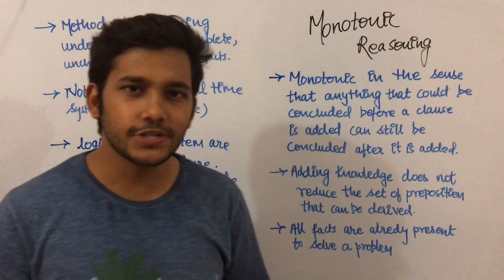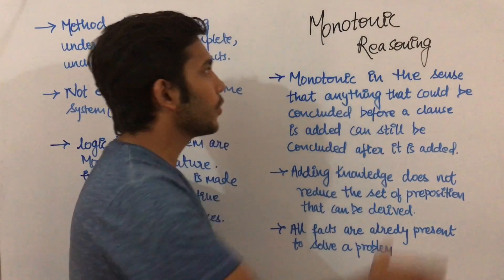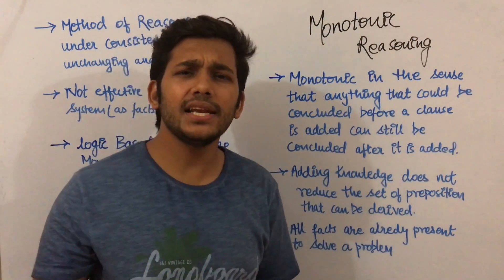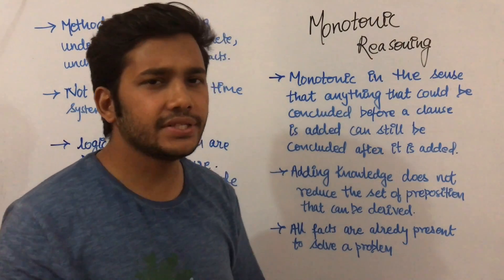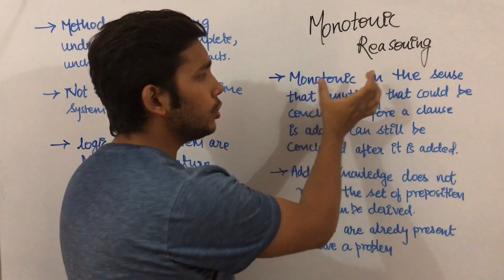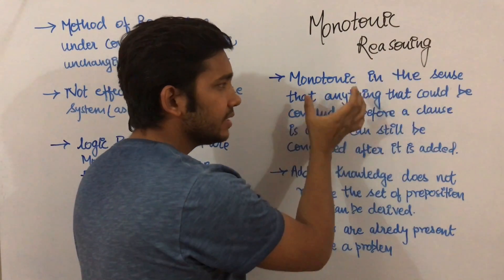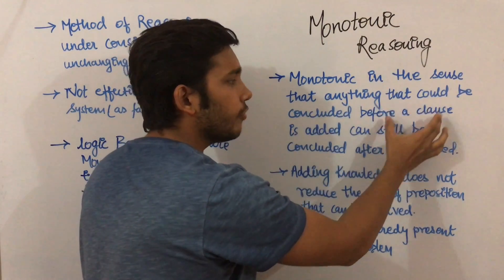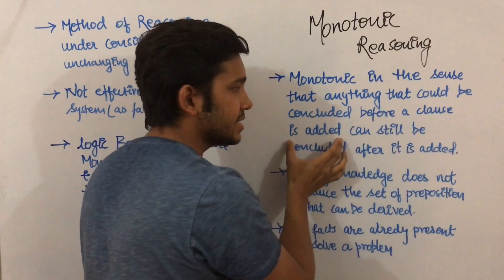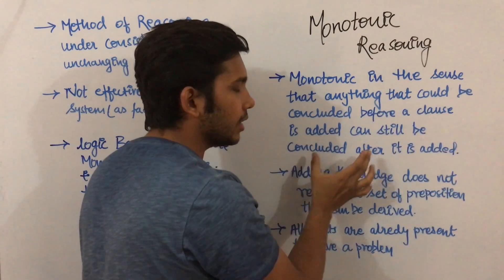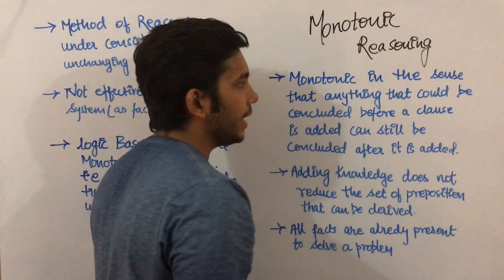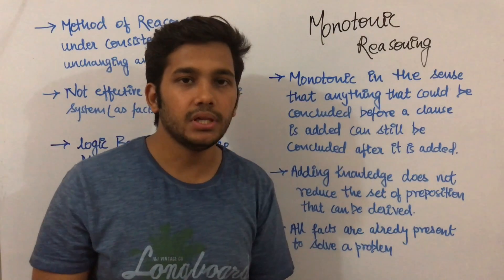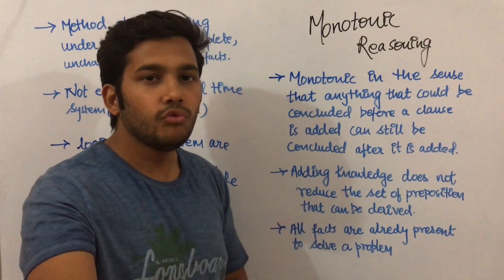In this video I'm going to talk about monotonic reasoning. Basically, monotonic means that anything that could be concluded before a clause is added can still be concluded after it is added. You can understand this with the help of an example.